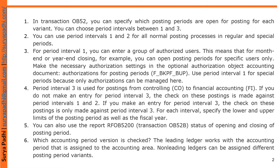Period interval 3 is used for postings from Controlling to Financial Accounting. The check on these postings is made against period intervals 1 and 2. If you make an entry for period interval 3, the check on these postings is only made against period interval 3. For each interval, specify the lower and upper limits of the posting period, as well as the fiscal year.